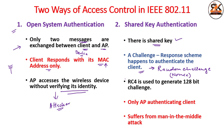The access point decrypts the response received from the client and compares it with the original nonce it had sent. If the two nonces match, the client is allowed access. This is what we call a challenge-response scheme.